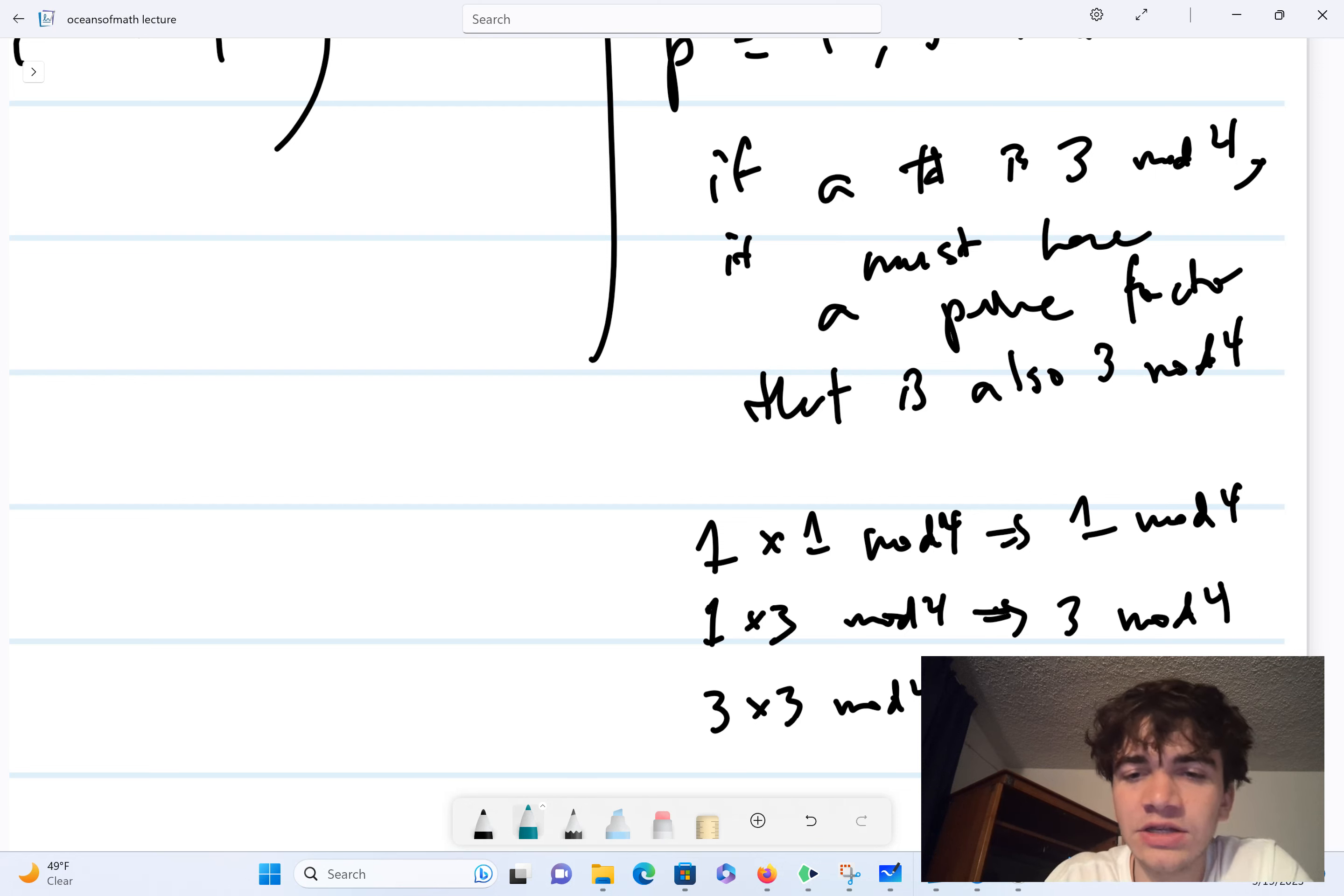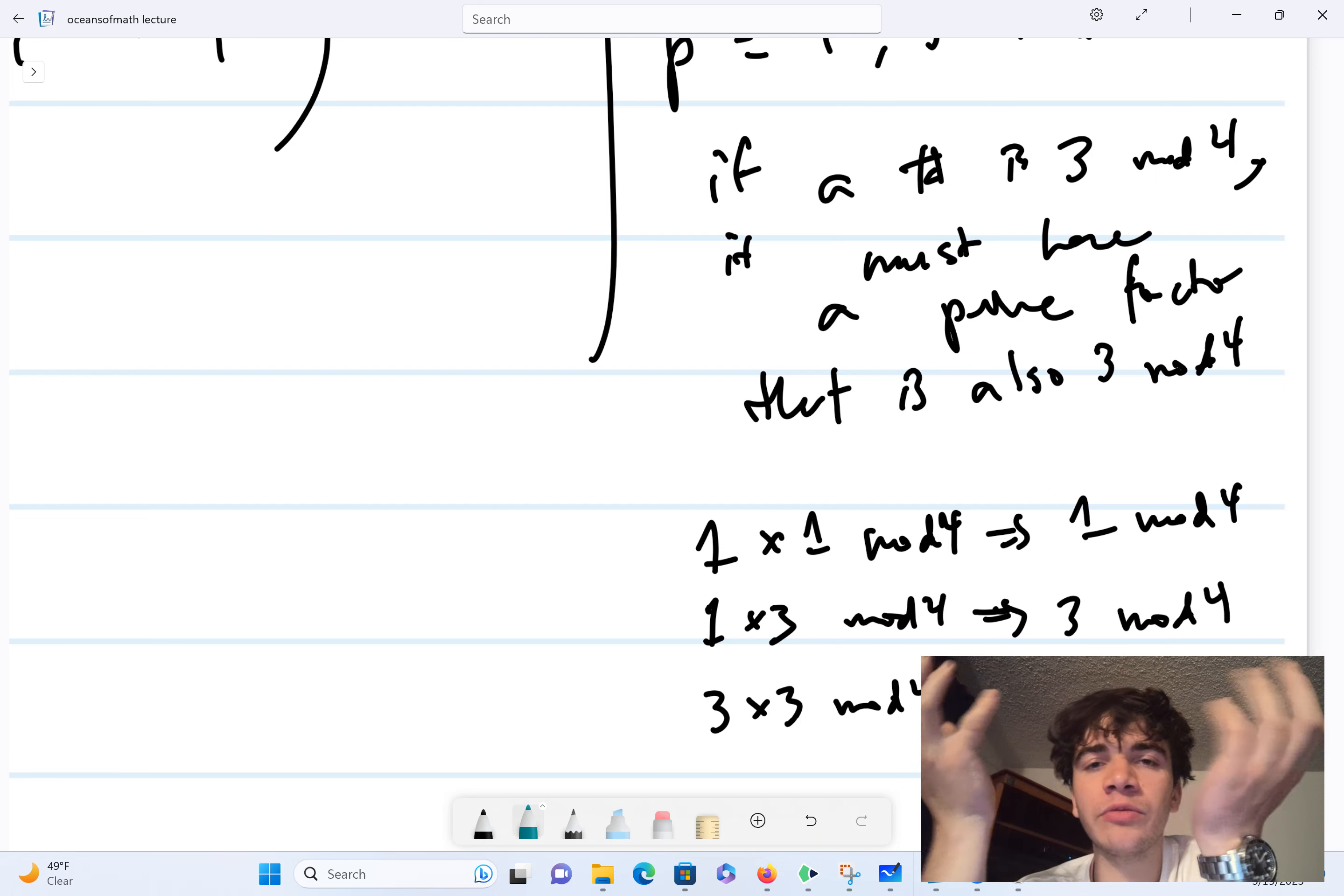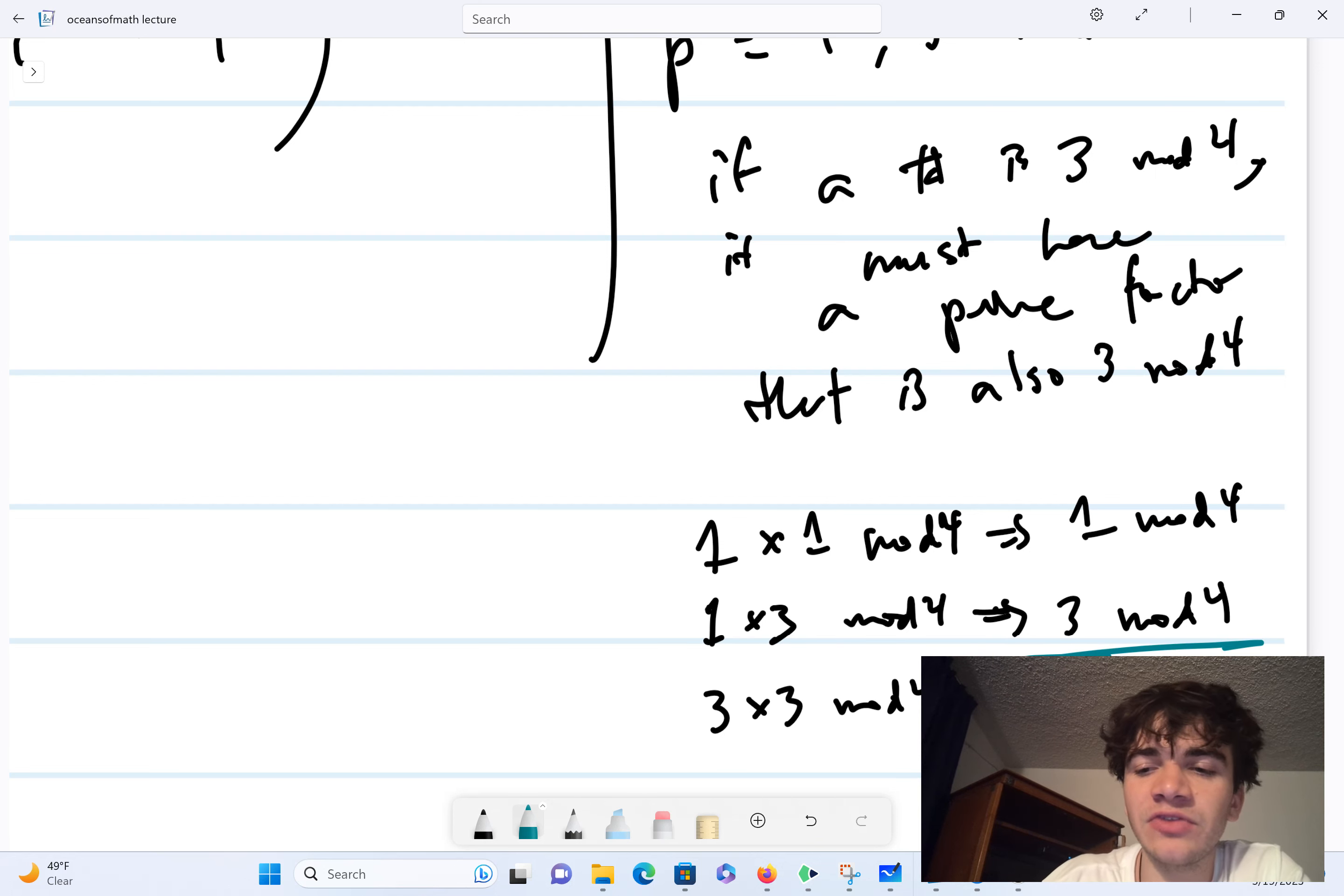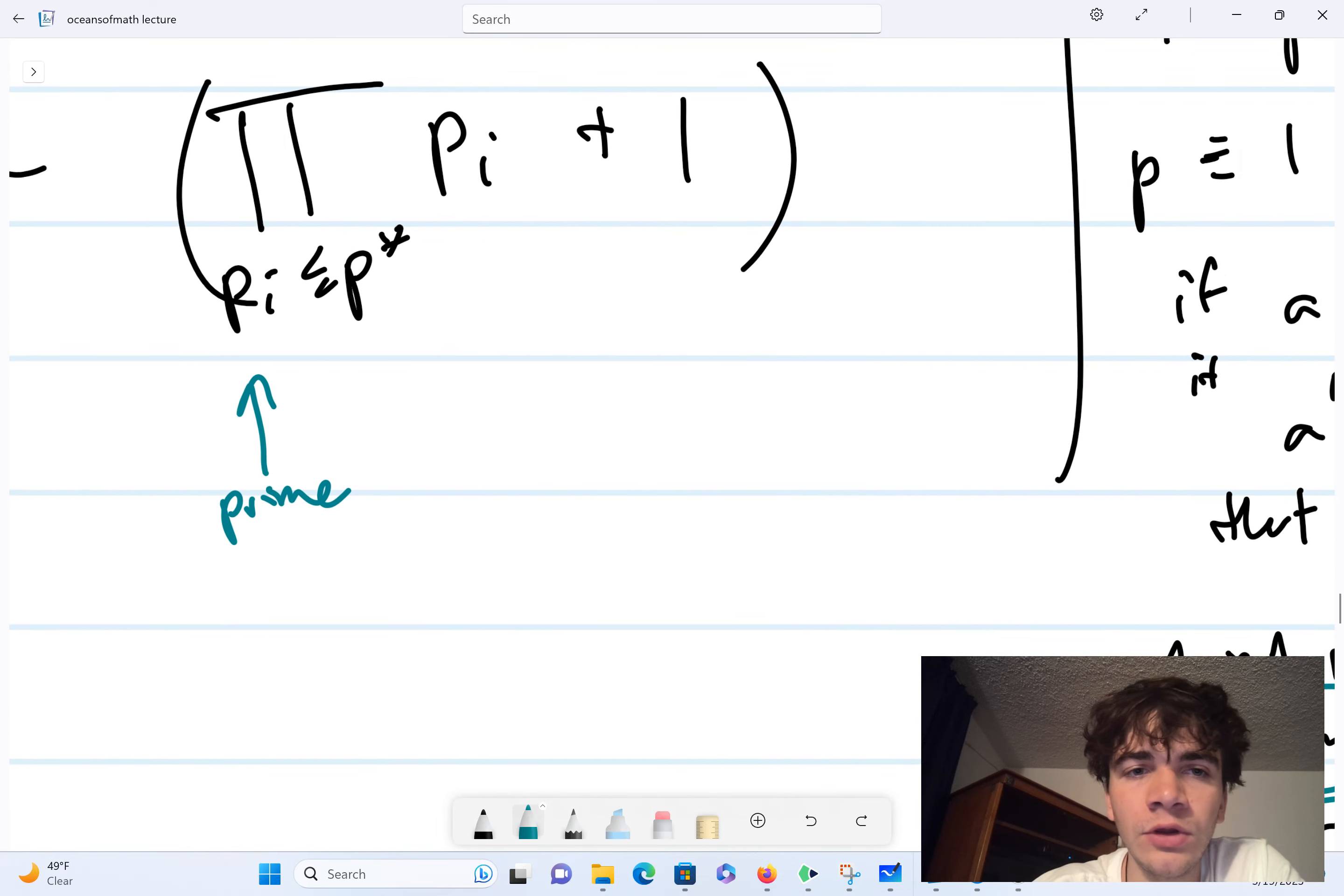So an interesting observation, and in particular, it tells us that we can't just have a bunch of prime numbers that are 1 mod 4, multiplying to give us a prime that's 3 mod 4. If we get something that's 3 mod 4, we have to have started with a number that is, with a prime number that was 3 mod 4.